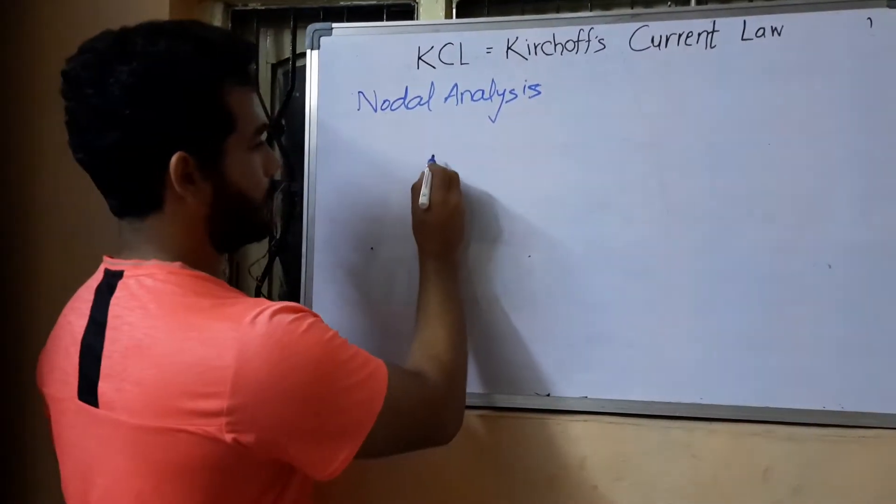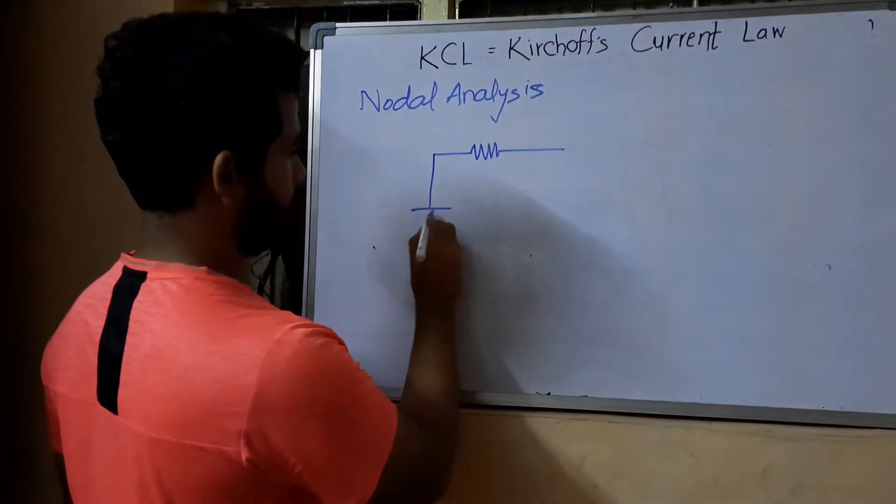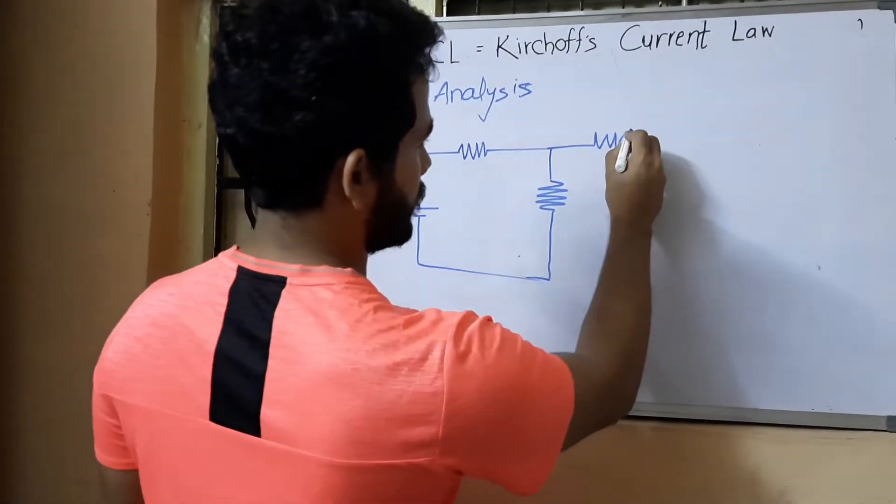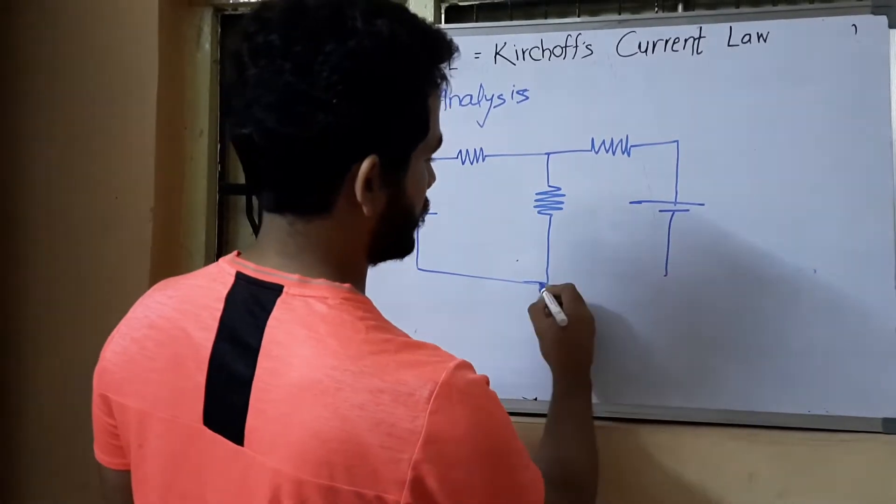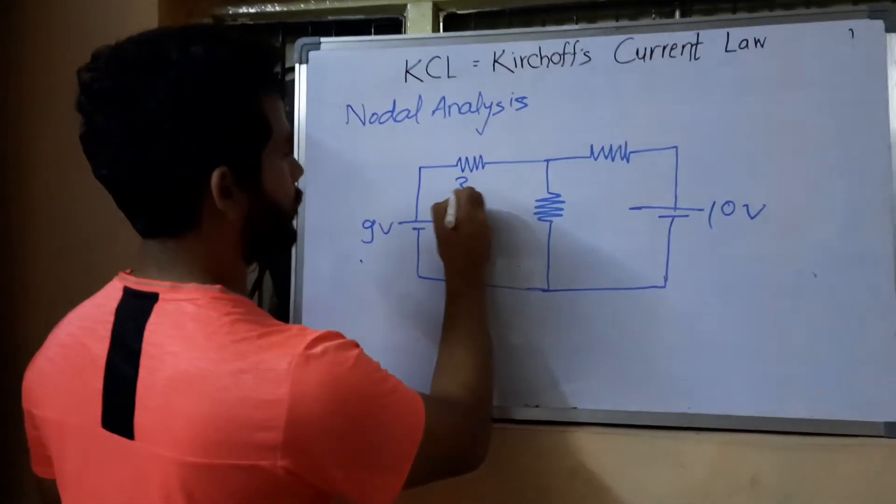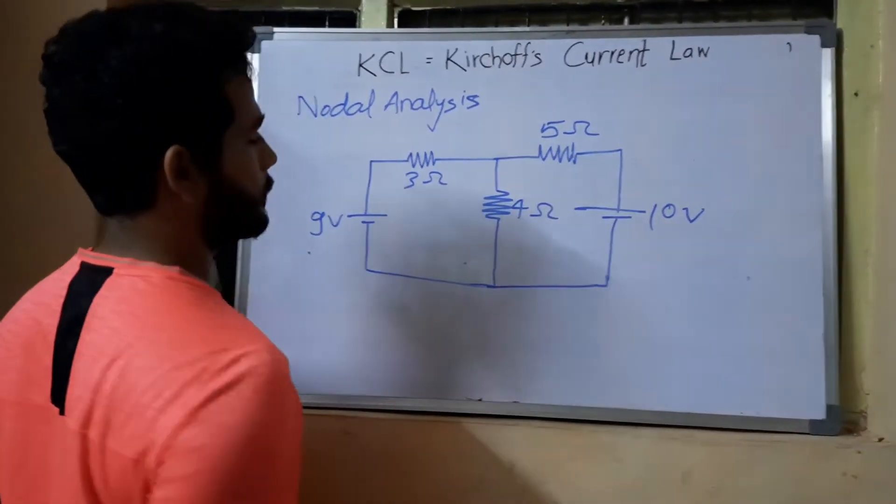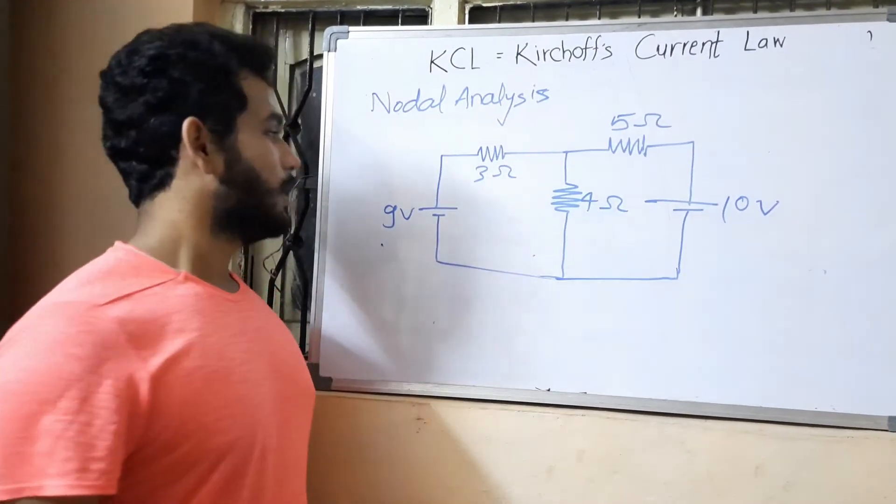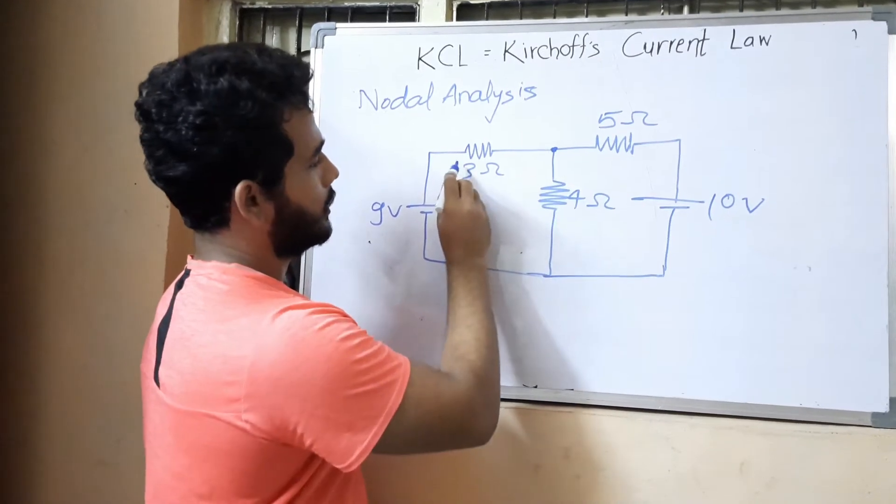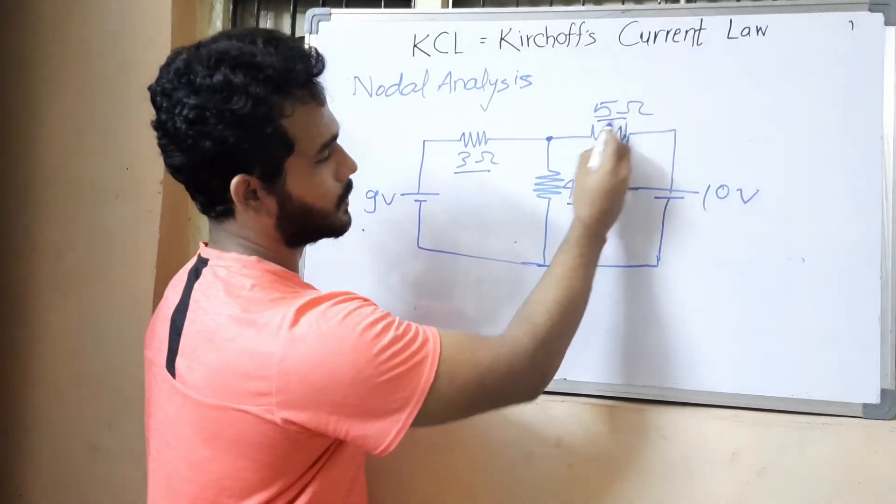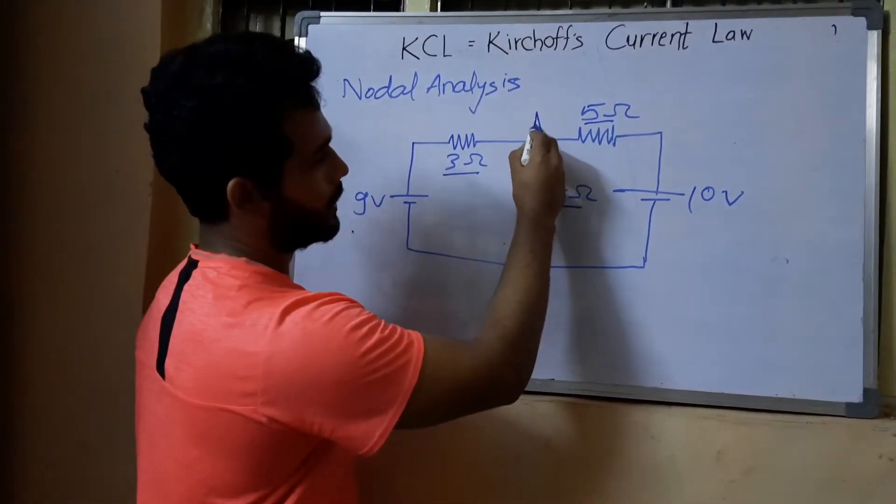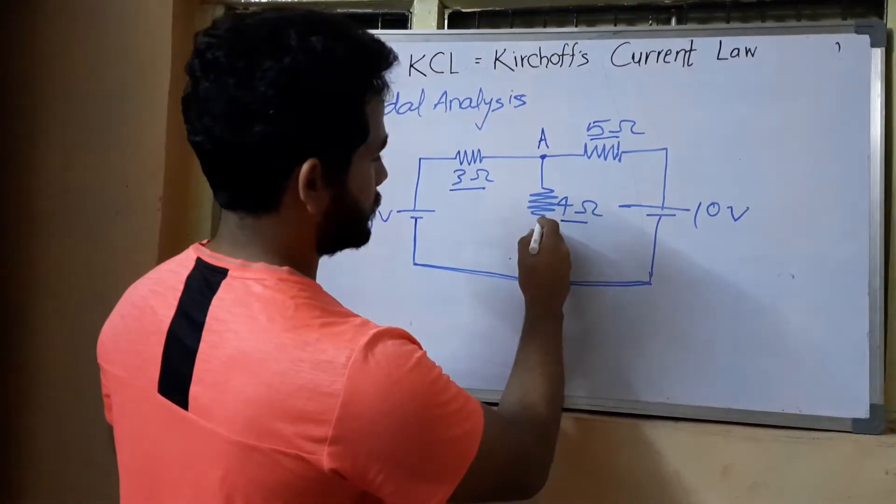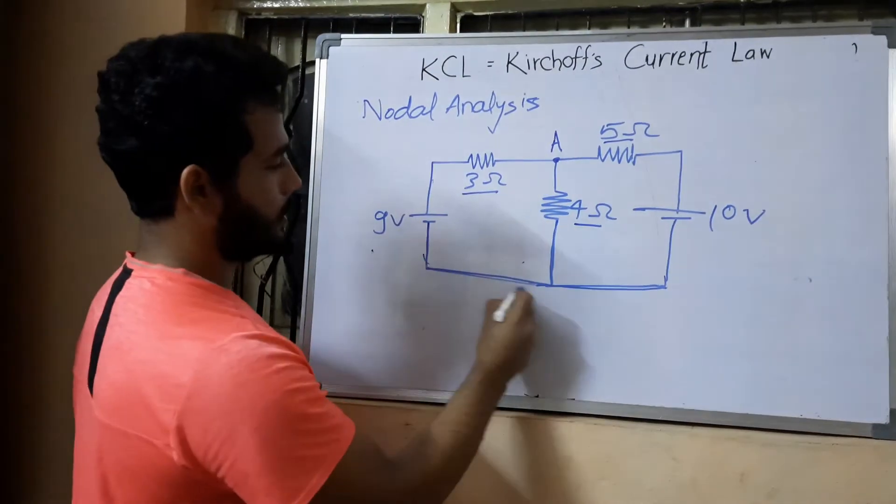Let's take one example. I am drawing one circuit. What is the definition of node? A node is a junction where two or more than two branches meet. Here is a junction where three ohm resistance, four ohm resistance, five ohm resistance meet at this point. Let's call this point A. These three branches meet: this one, this one, this one.